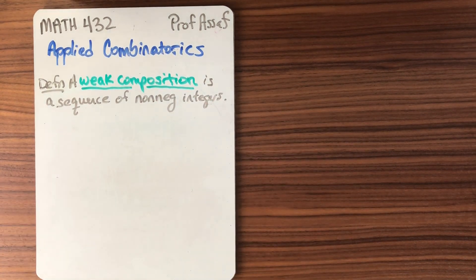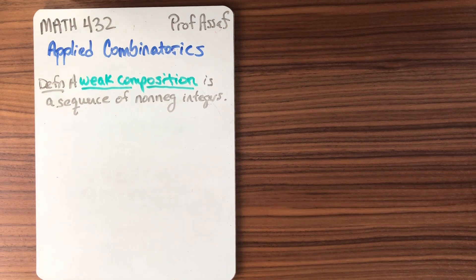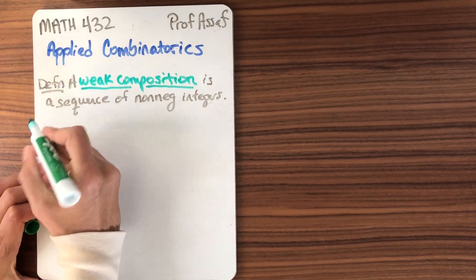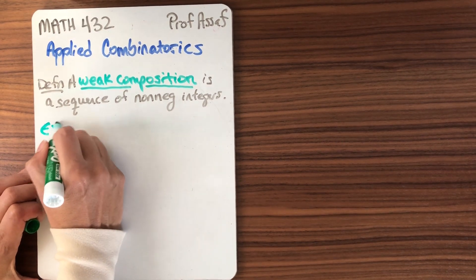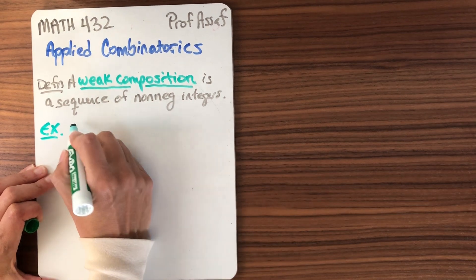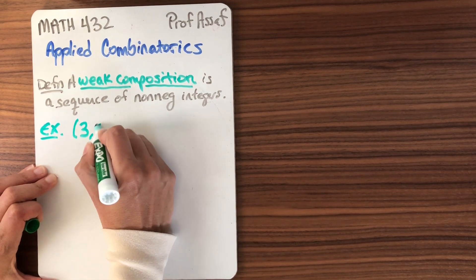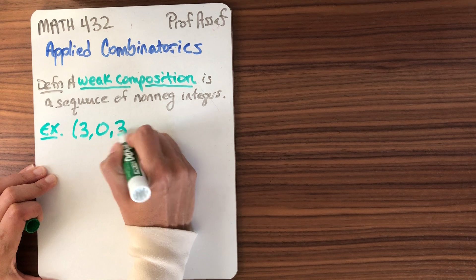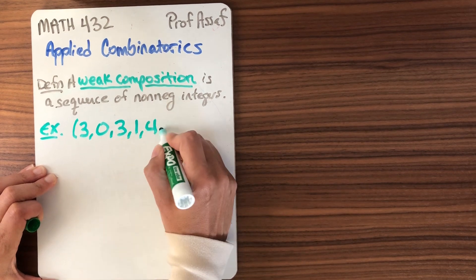So let's do some examples. That's always a good way to start. Here's an example. We could take the sequence 3, 0, 3, 1, 4, 0.